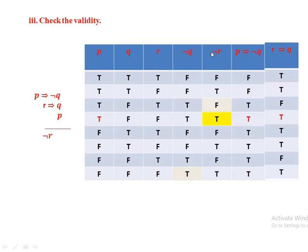P implies negation Q, using the definition of implication, has values: false, false, true, true, true, true, true, true. R implies Q, also using the definition of implication, has values: true, true, false, true, true, true, false, true.